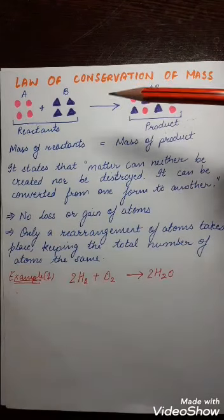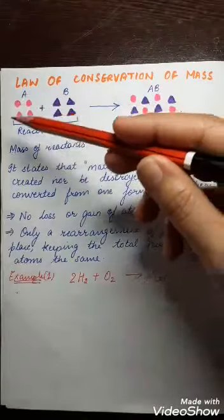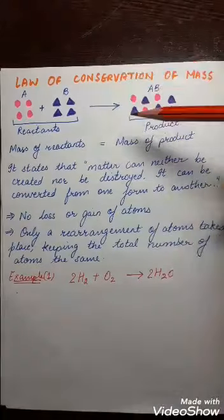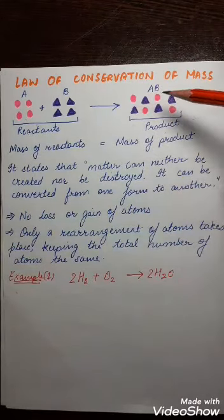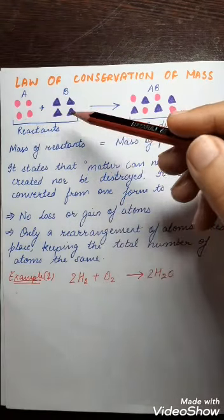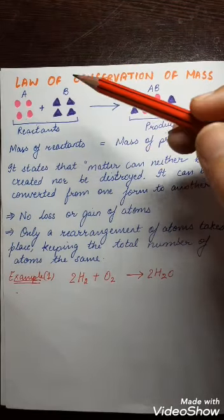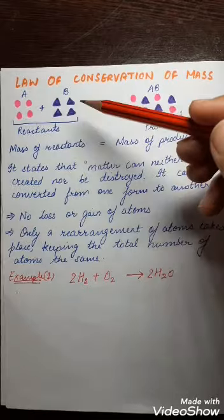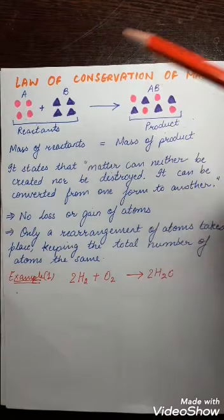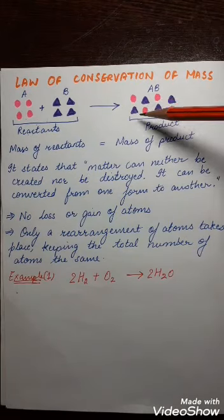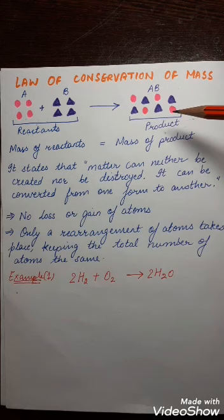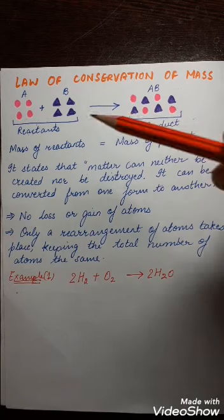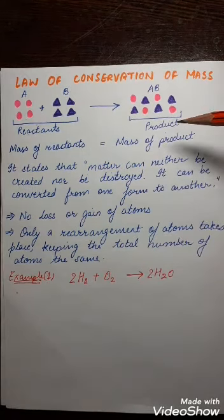Let's take an example with an equation. There are two reactants, A and B. Reactant A has four atoms of its own, and reactant B has four atoms of its own. They react together to form a completely new product, AB, which is a combination of reactant A and reactant B. If we count the atoms: four atoms of A plus four atoms of B equals eight atoms in the reactants. In the product side, there are also four atoms of A and four atoms of B, totaling eight atoms.